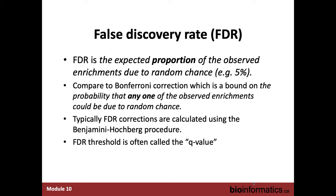FDR, or false discovery rate, is the expected proportion of the observed enrichments due to random chance — perhaps 5%. If your FDR cutoff is 0.05, that means you assume that no more than 5% of your results could be wrong. Compare that to Bonferroni, which says that any one of the observed enrichments could be by random chance. The typical FDR procedure is the Benjamini-Hochberg procedure, from the 1990s. The FDR threshold is also called sometimes a Q value or adjusted p-value — these terms are usually used interchangeably. You need to know that they are all attempting to correct for multiple testing. Be cautious about genomics papers that do not do multiple testing correction.